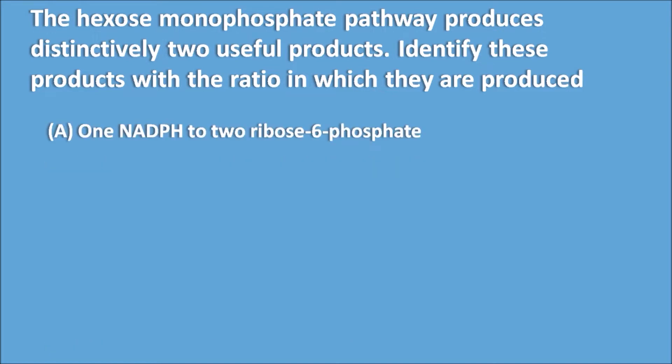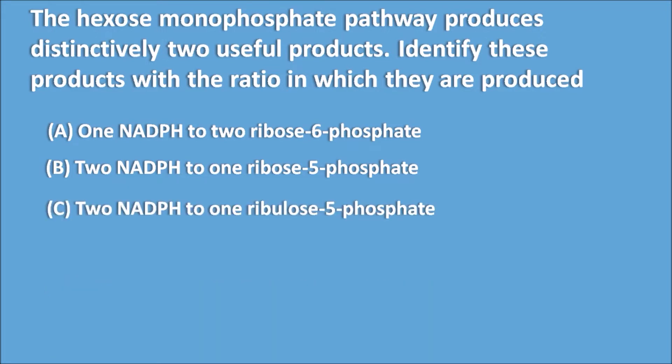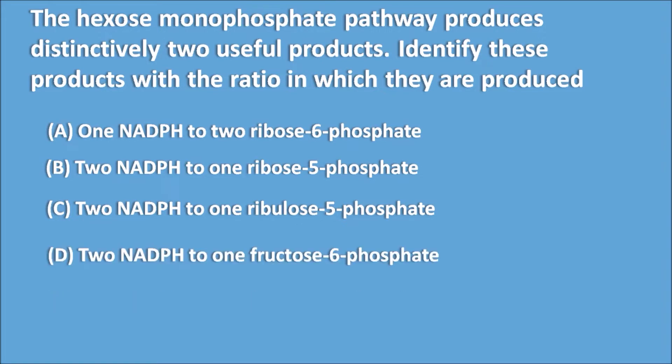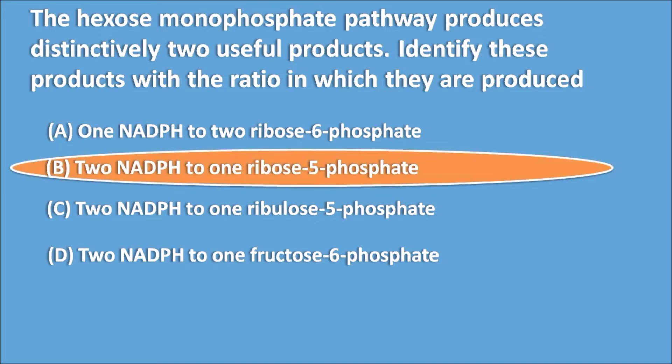Option A: 1 NADPH to 2 ribose-6-phosphate. Option B: 2 NADPH to 1 ribose-5-phosphate. Option C: 2 NADPH to 1 ribulose-5-phosphate. Option D: 2 NADPH to 1 fructose-6-phosphate. The right answer is Option B — 2 NADPH to 1 ribose-5-phosphate.